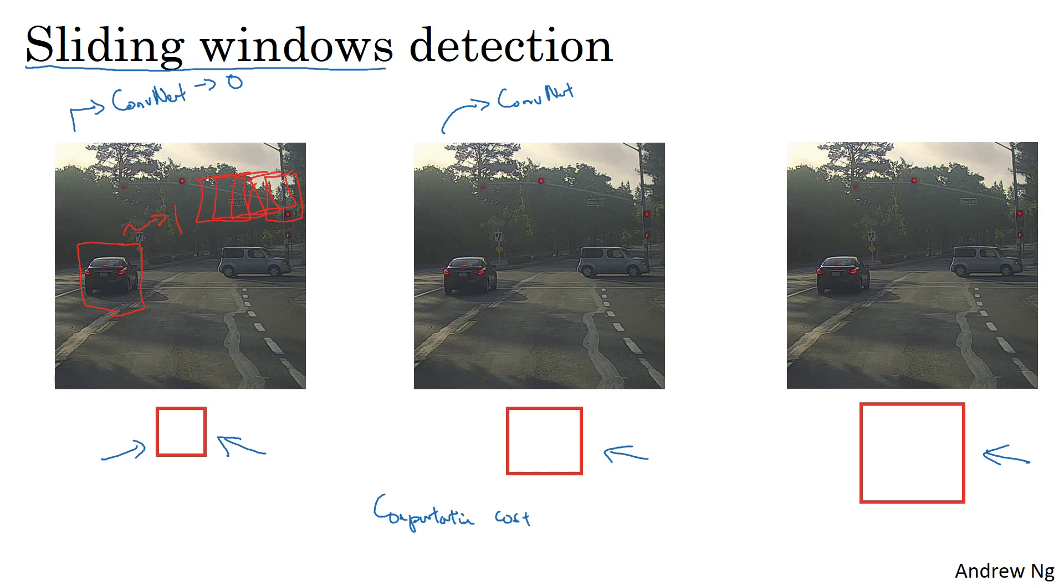But with ConvNets, running a single classification task is much more expensive, and sliding windows this way is infeasibly slow. Unless you use a very fine granularity or very small stride, you end up not able to localize the objects accurately within the image as well.